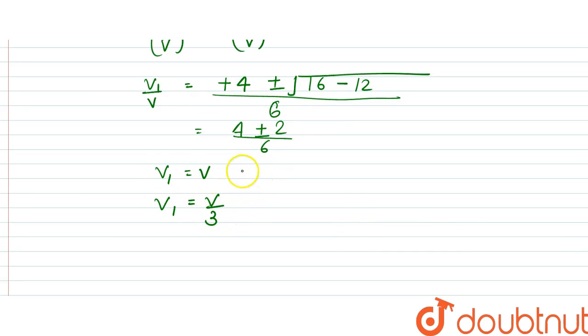two values that we get here. So this is not possible because it cannot have the same velocity even after collision and transfer of energy, so this would be the solution: v₁ = v/3. So we can